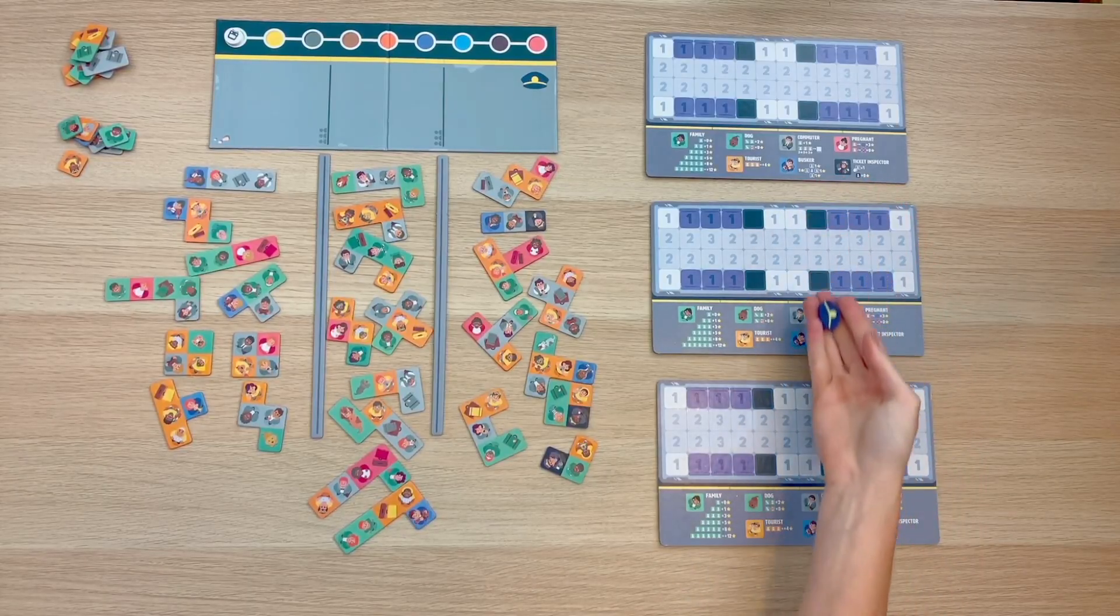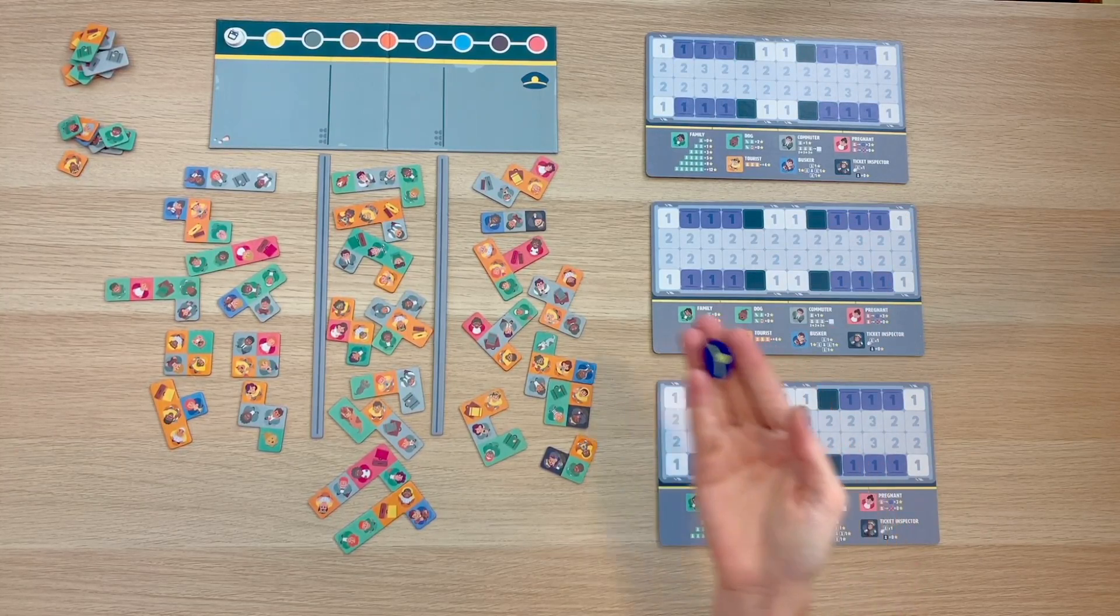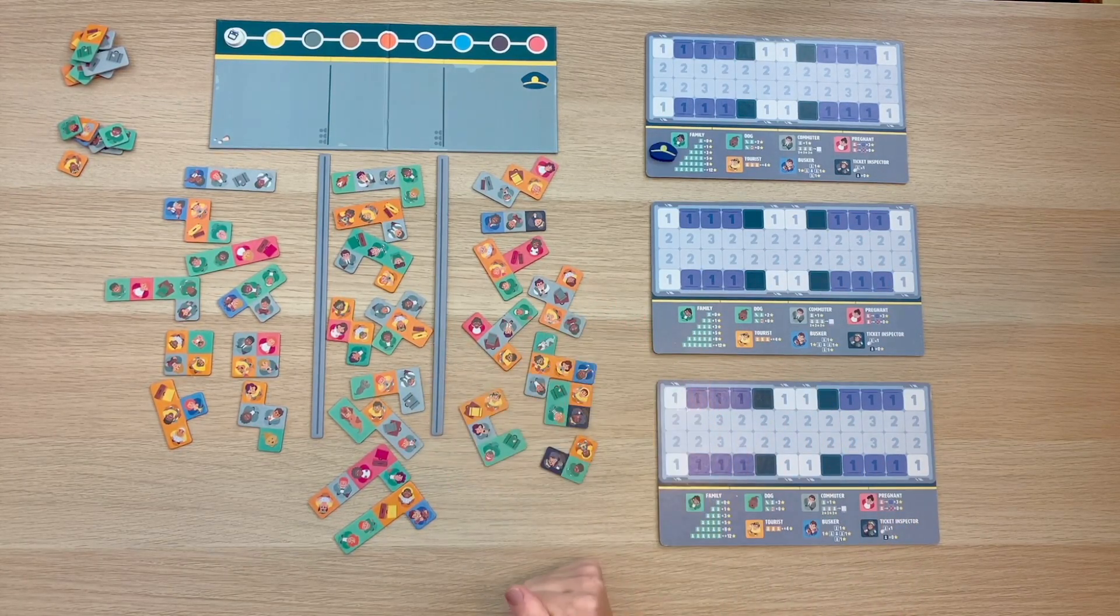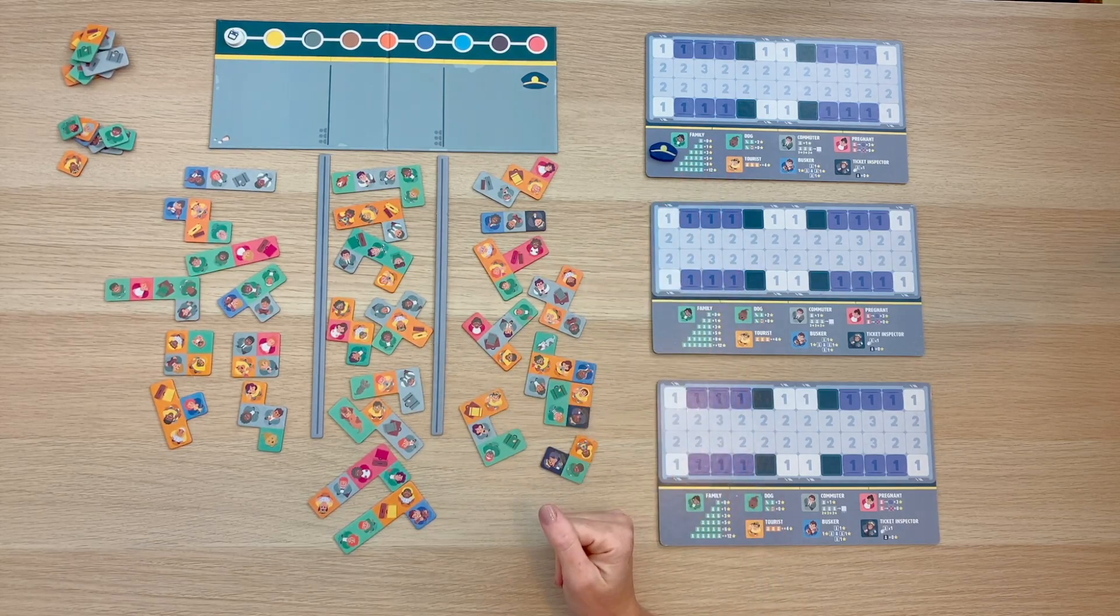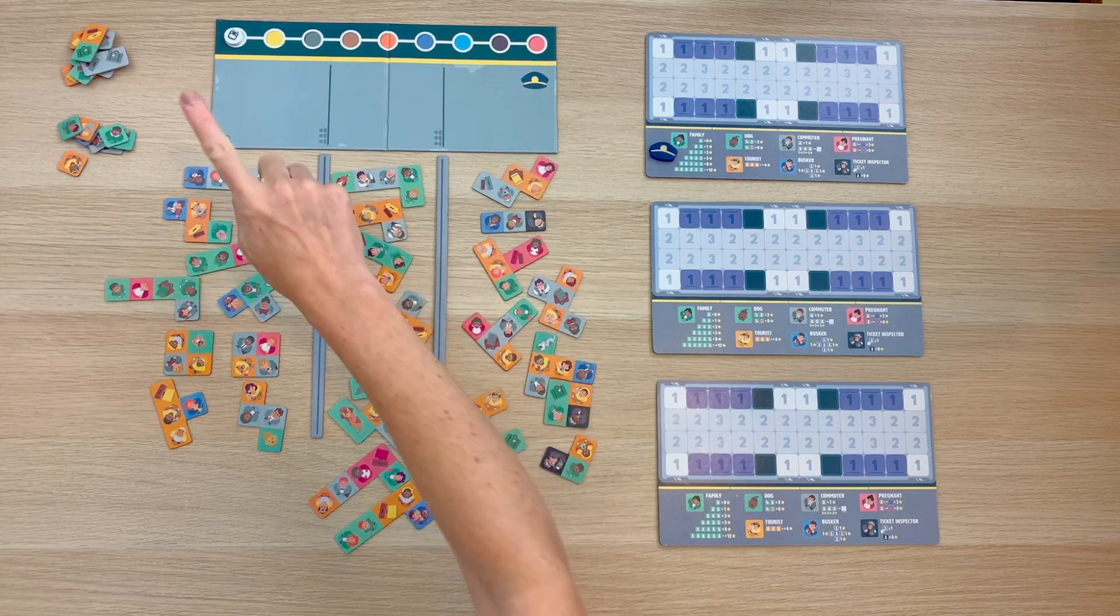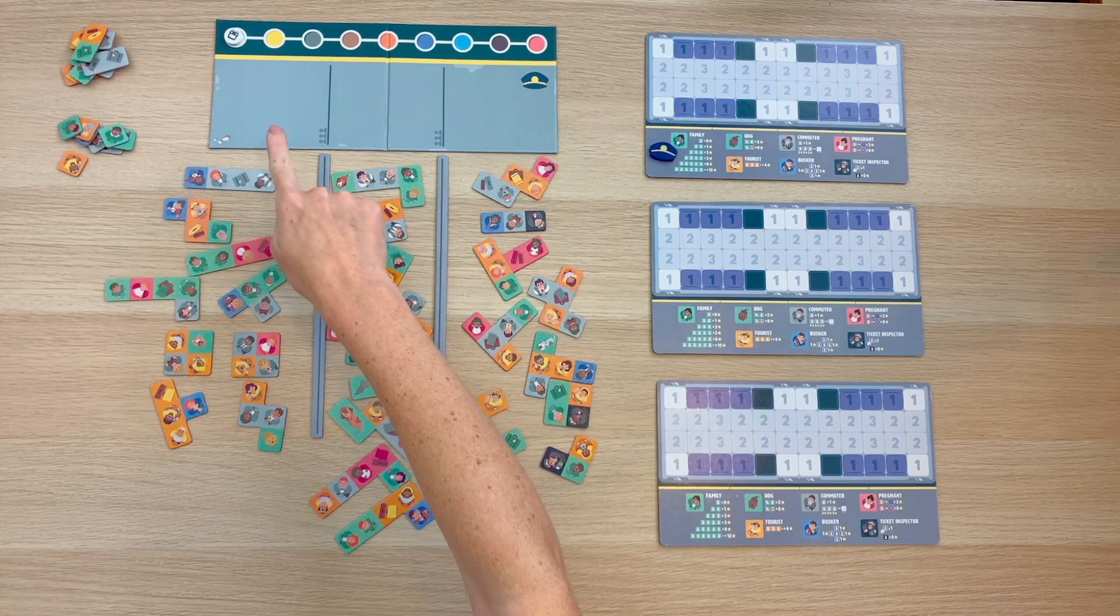Go ahead and decide which player is going to go first, and they can start with the conductor chip. Each round of the game is split into 4 parts. The conductor will start each round, including the first one, by moving the stop marker to the next stop.